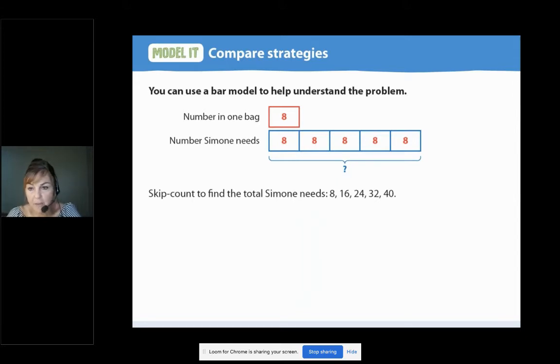Let's take a look at your work text, page 126 for the first model it. Maybe this was one of the ways you thought about it. It's a bar model. And I want you to notice the red and blue color coding. In the top row of the bar model, the red square shows that there are eight oranges in one bag. What about the second row? How many blue squares are there? Let's count those blue squares together. Ready? One, two, three, four, five.